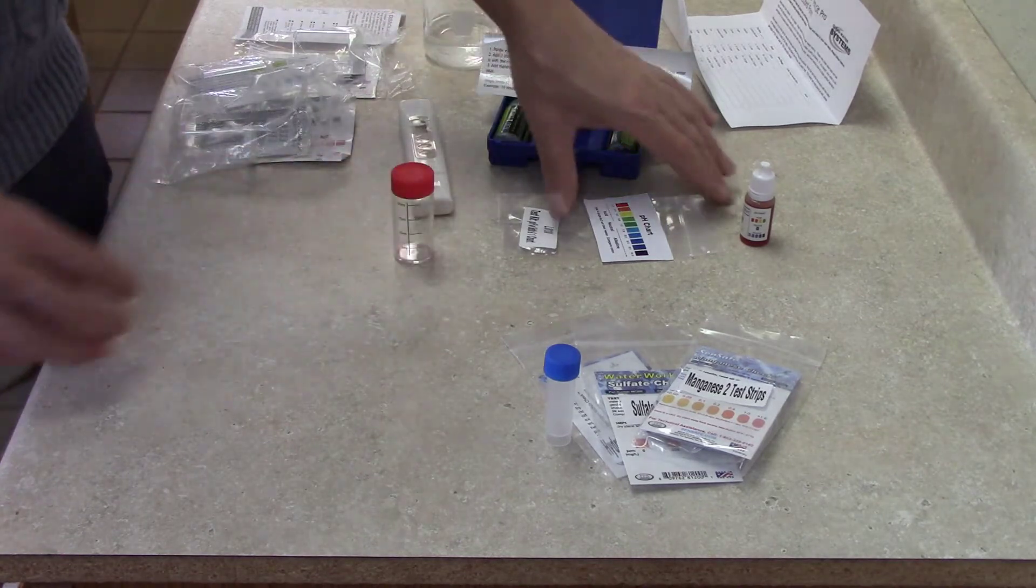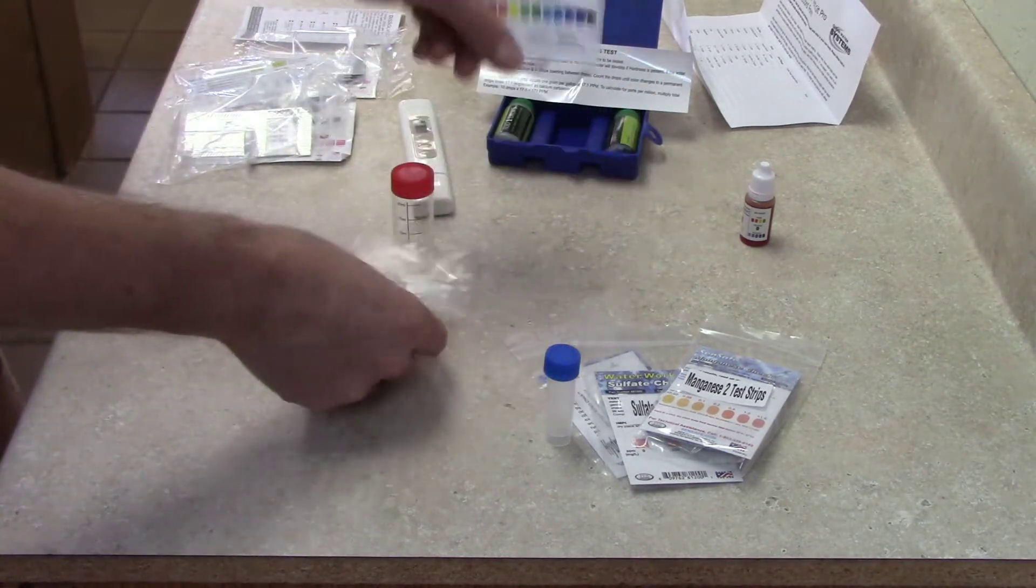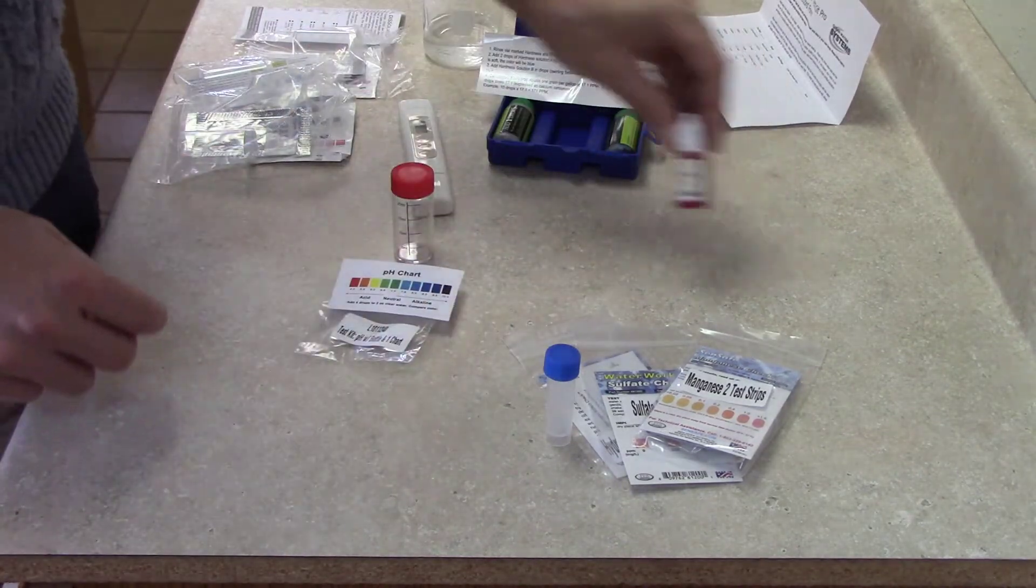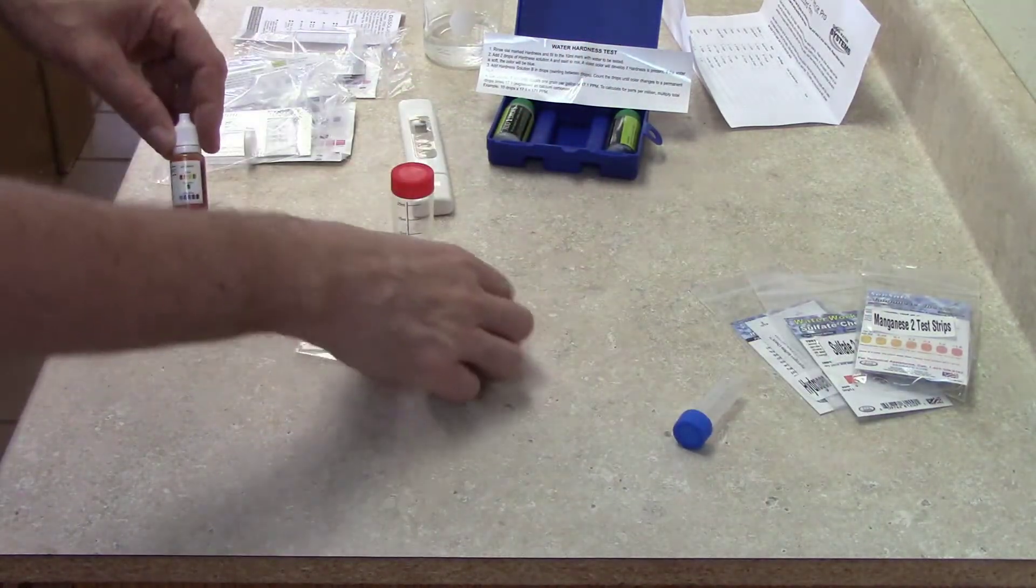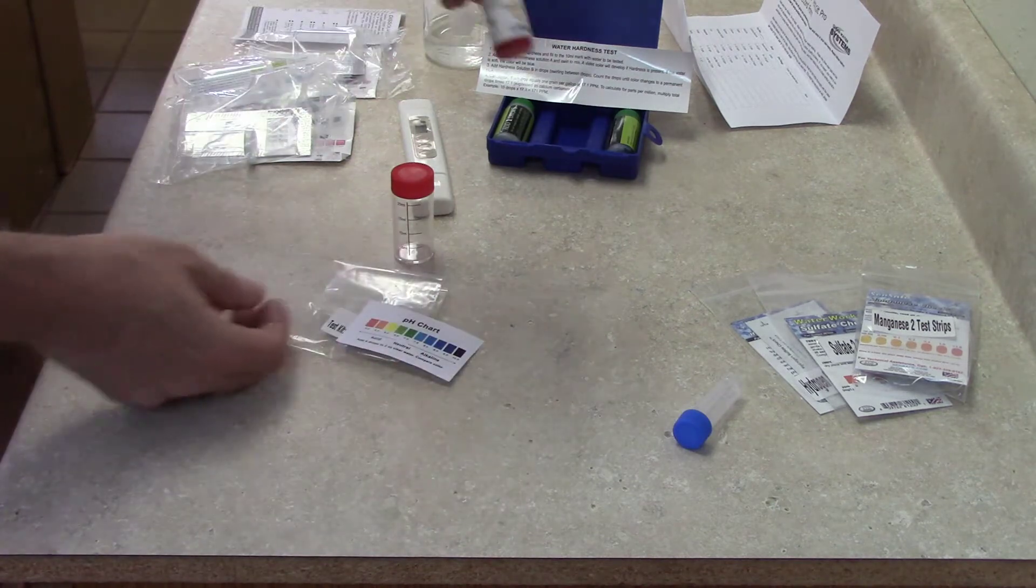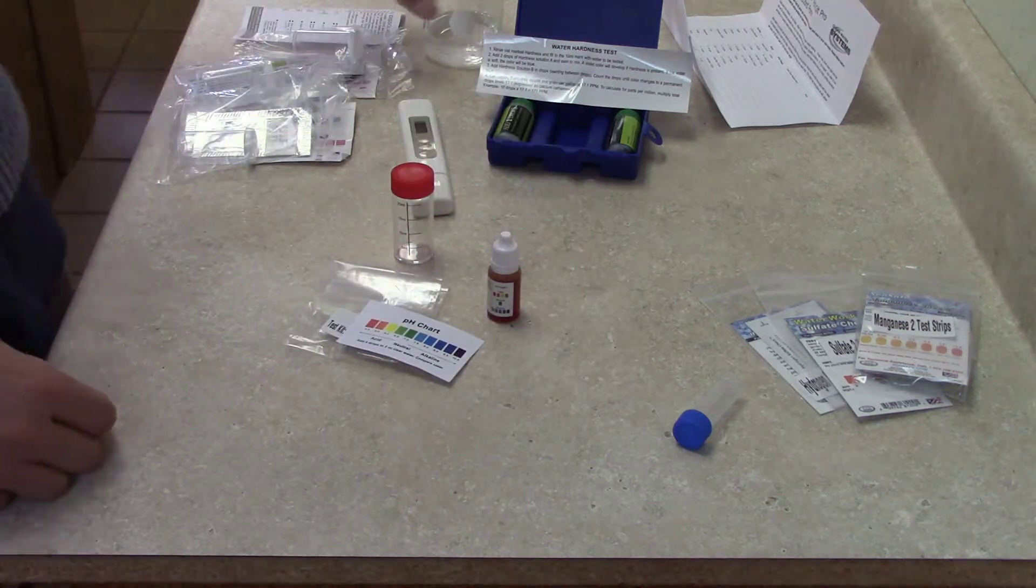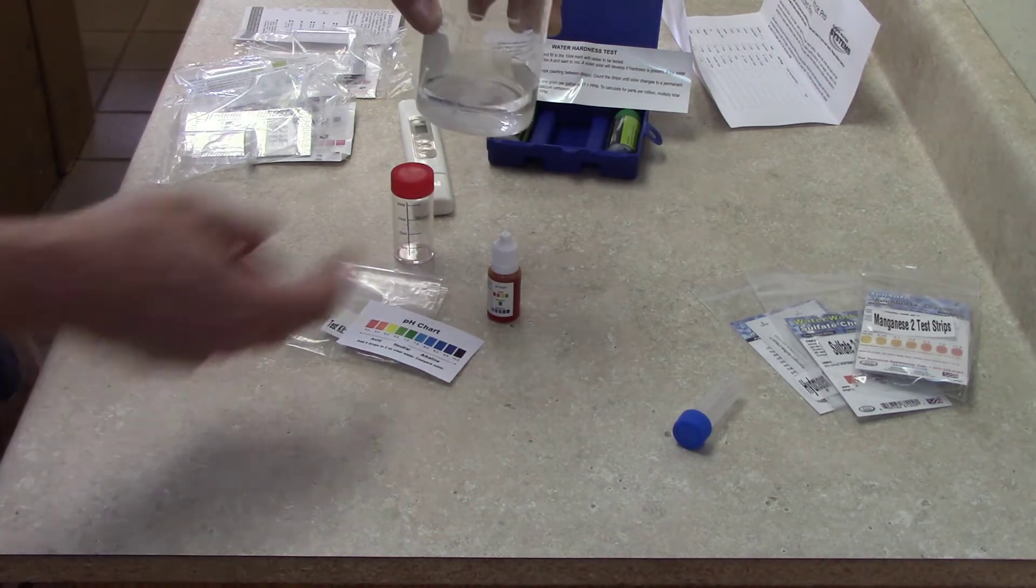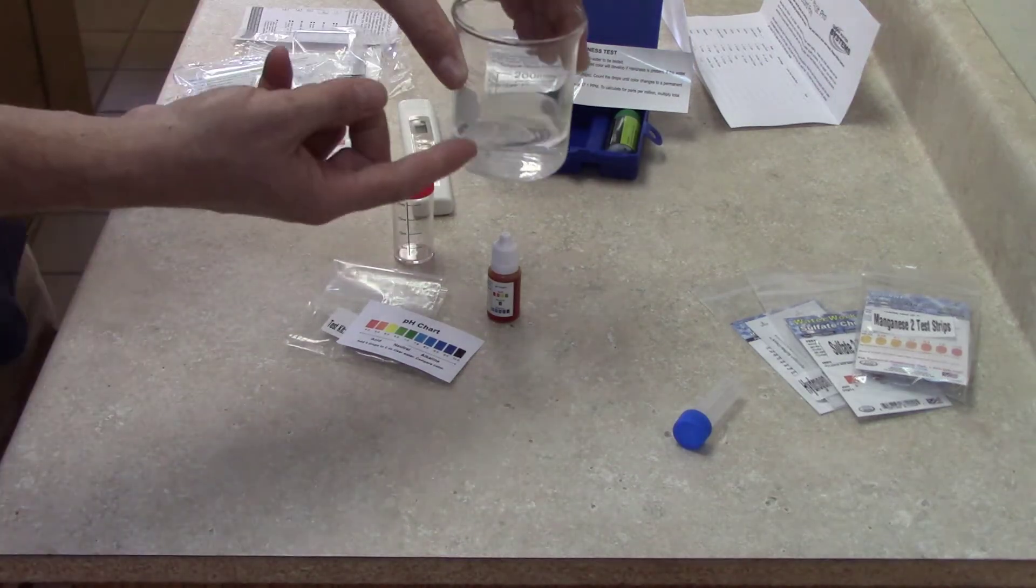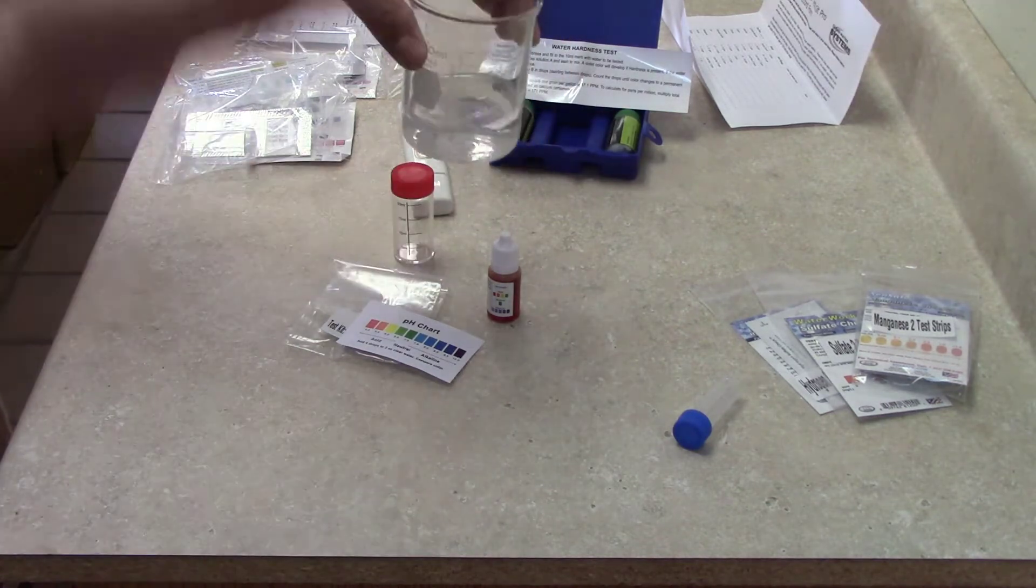Now the last one is for pH. There's your color chart to confirm and your pH drops that you're going to use. The instructions on the chart say add four drops to two ounces of water. You can use just about anything - this is about two ounces, a quarter cup of water. It has to be a clear glass that you can see through.